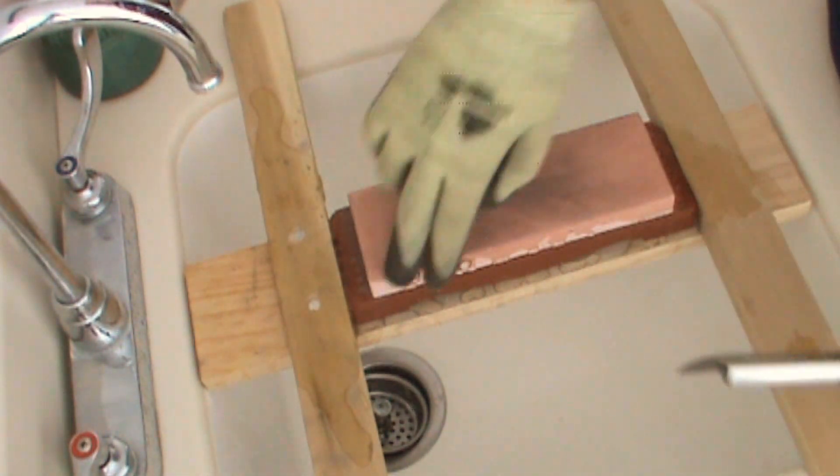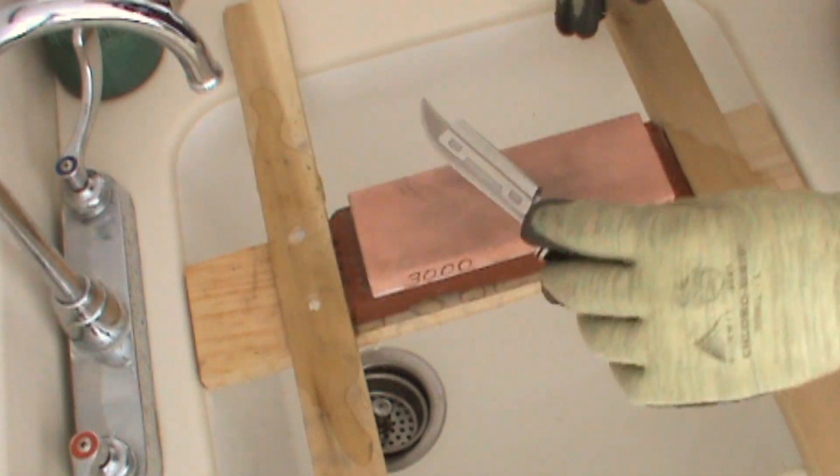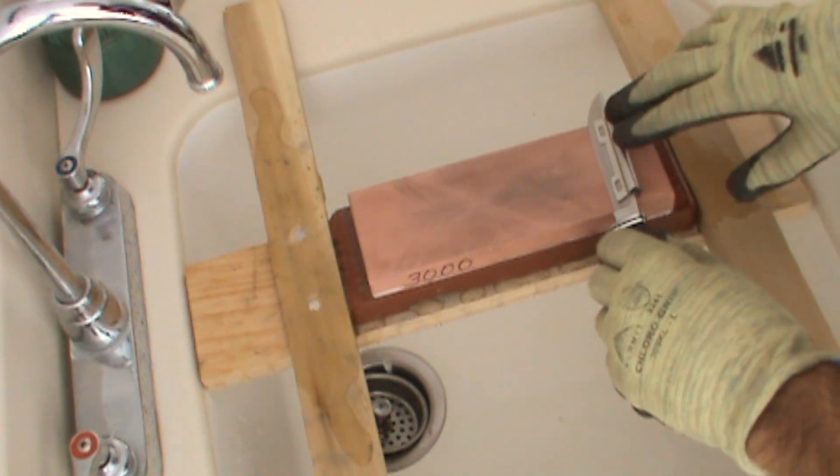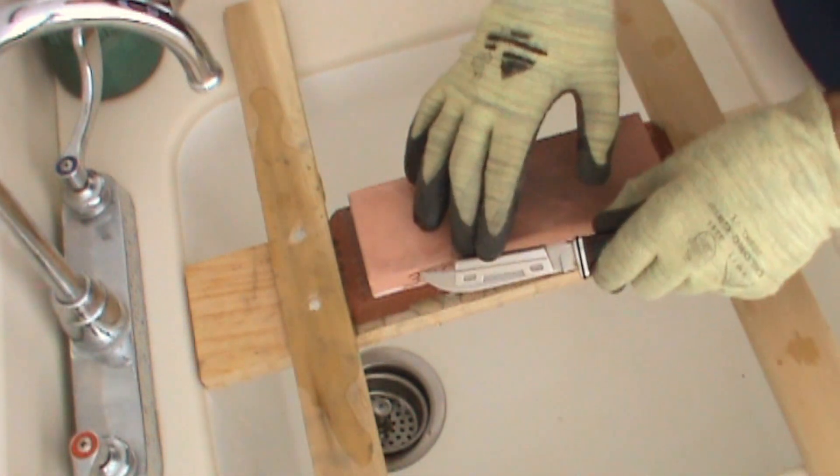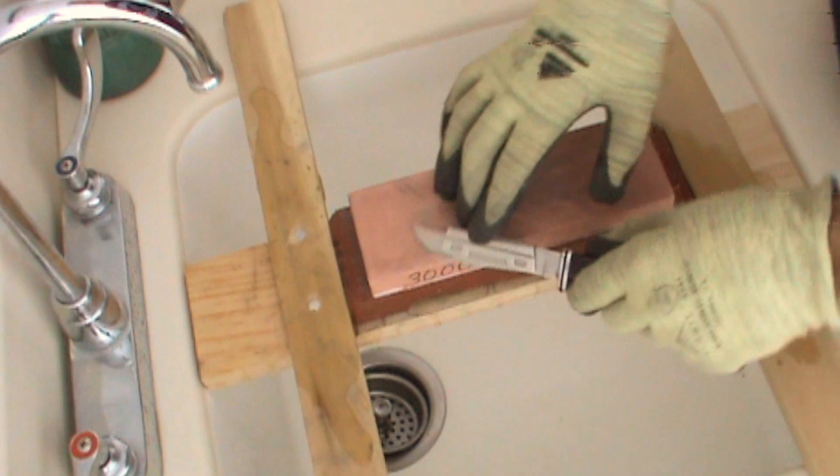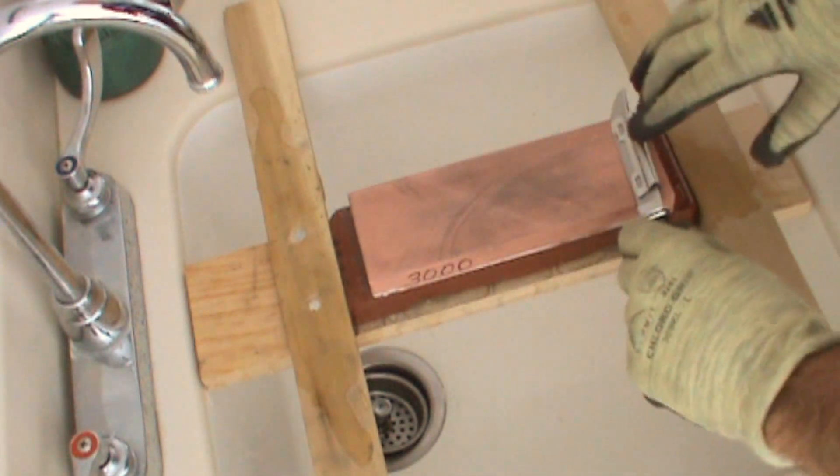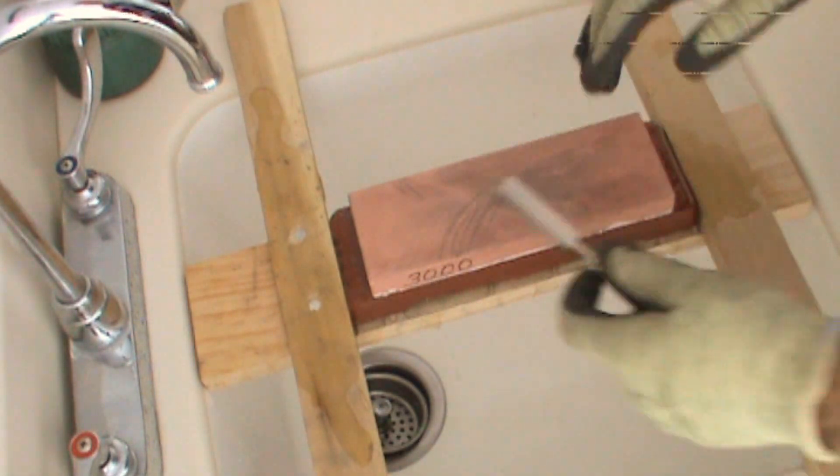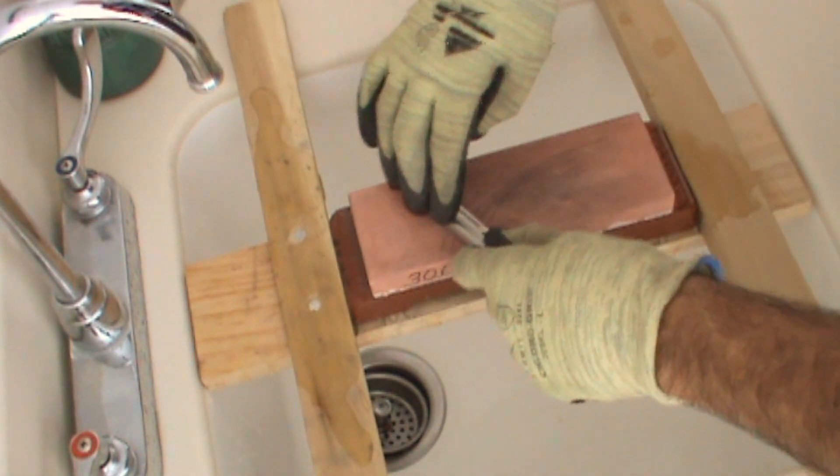We're going to start with the 3000 grit because the knife is already fairly sharp. The clip lays it perfectly flat at the right angle. All you do is go like this and continue your strokes. You can see it's taking a little bit of metal off. Perfect angle. Turn it over. Repeat.